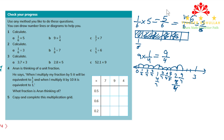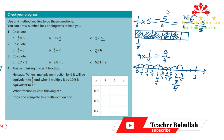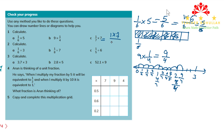Part c is one-seventh times seven. I will directly multiply: one times seven over seven. One times seven is seven, and the denominator is also seven, which equals one. Because seven-sevenths is equal to one. We are done with question one.